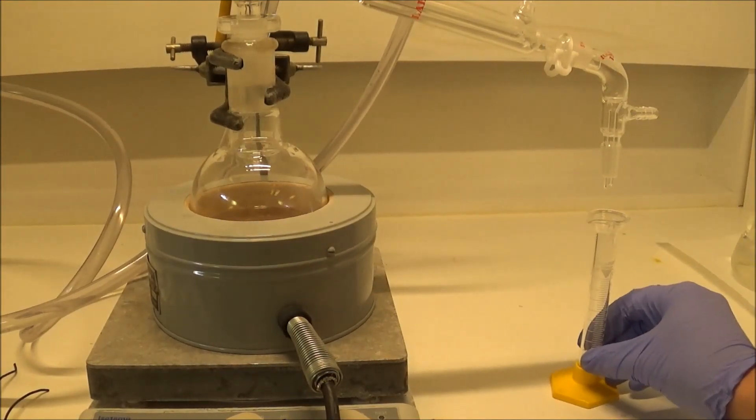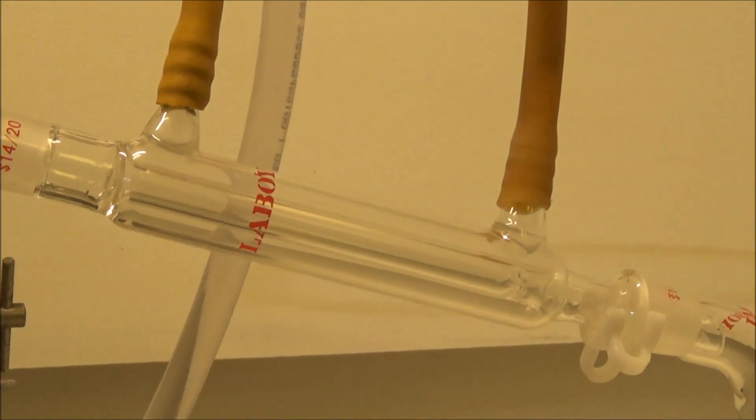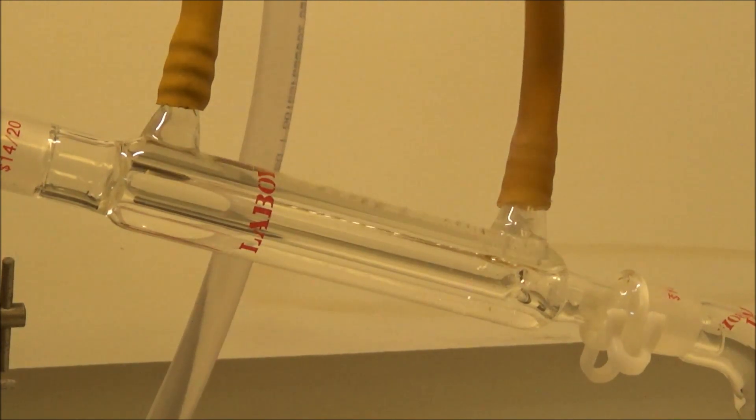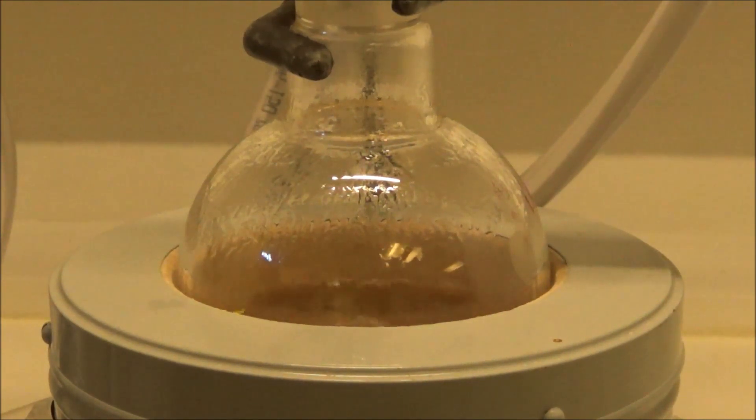I opted for a simple distillation because a column would be very slow with the high distillation temperature, and I didn't have an accurate vacuum gauge for vacuum distillation. 1,3-dibromopropane boils at 167 degrees, so I insulated everything well with aluminum foil.